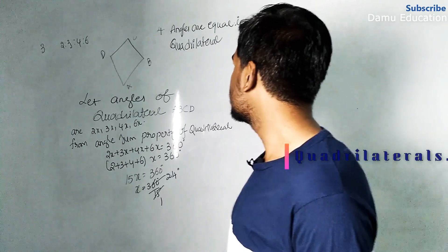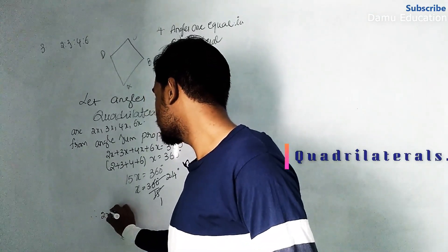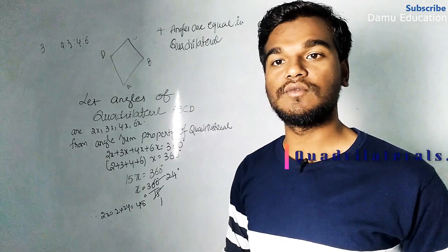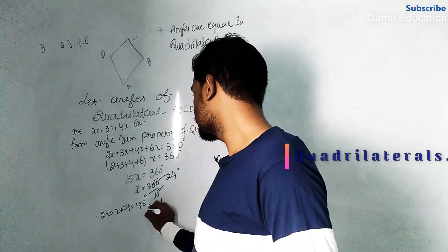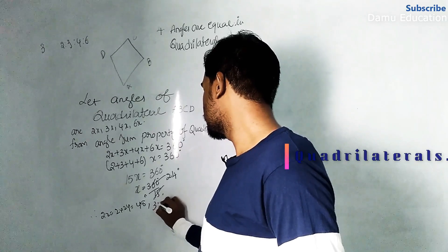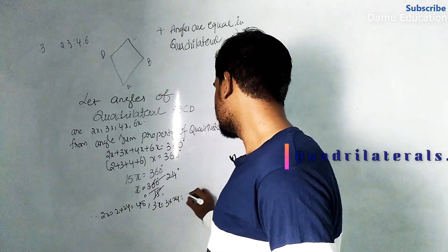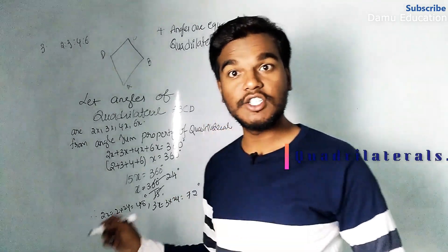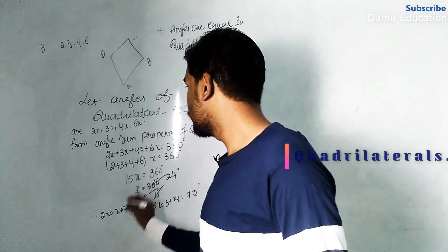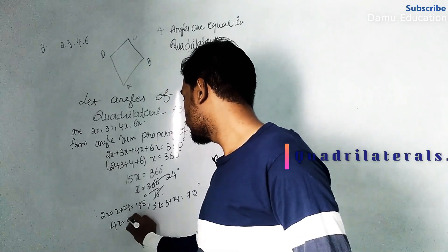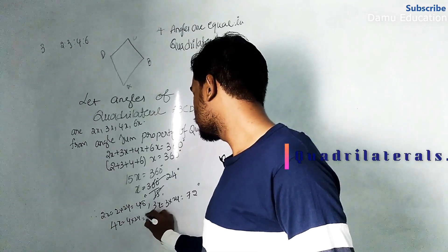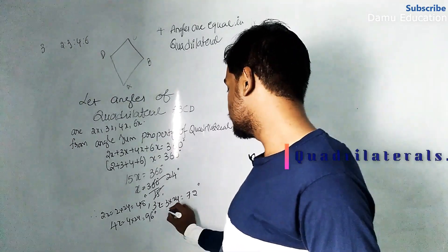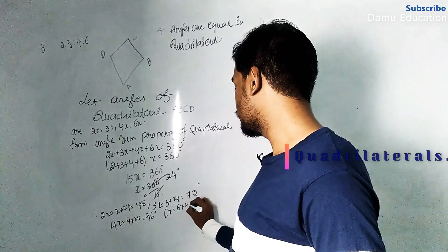Now let's find each angle. 2x = 2 × 24 = 48 degrees. 3x = 3 × 24 = 72 degrees. 4x = 4 × 24 = 96 degrees. And 6x = 6 × 24 = 144 degrees.